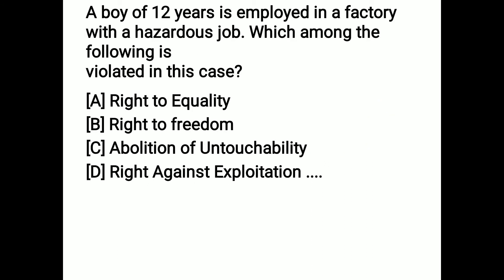The next question: a boy of 12 years is employed in a factory with a hazardous job. Which among the following is violated in this case — right to equality, right to freedom, abolition of untouchability, or right against exploitation? Option D is correct — employing a boy below 14 years in a hazardous factory is related to right against exploitation.